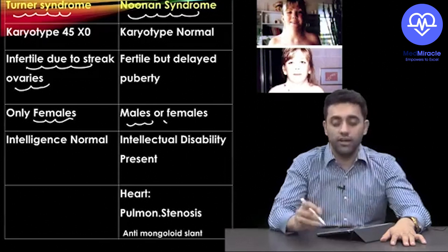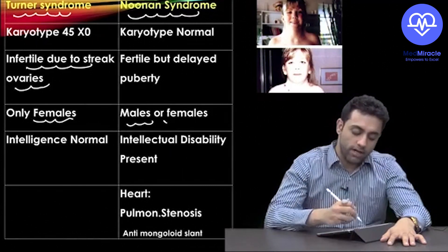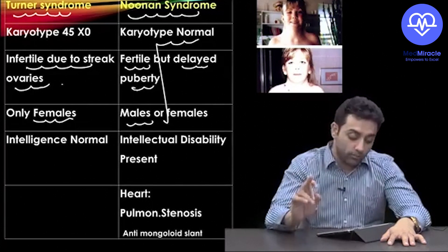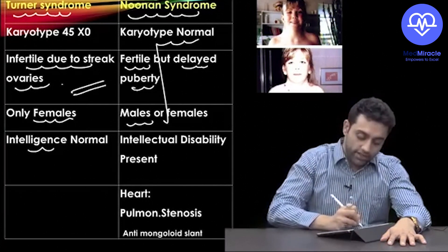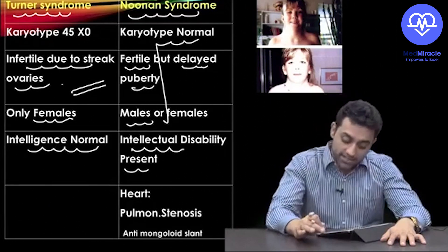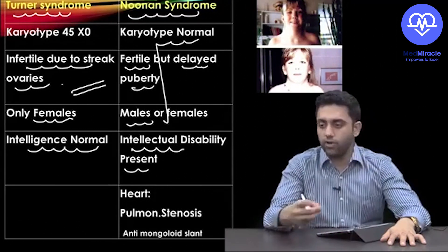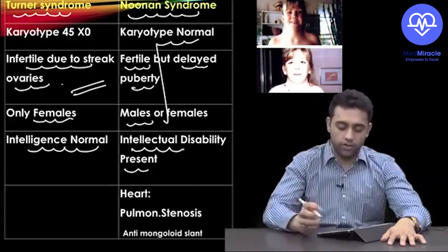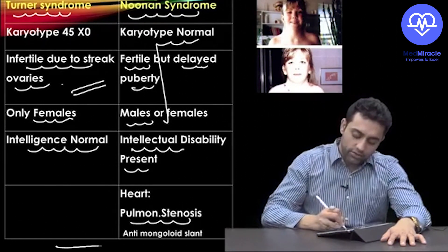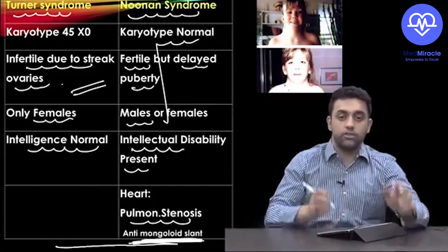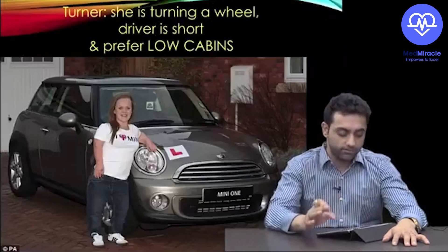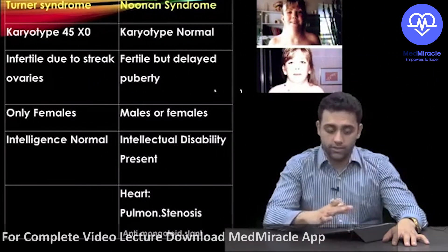Karyotype differences: Turner Syndrome is 45 XO, whereas Noonan Syndrome has a normal karyotype. Turner Syndrome has normal intelligence; Noonan Syndrome has intellectual disability. The most common congenital heart defect in Noonan Syndrome is pulmonary stenosis. Both Noonan Syndrome and Treacher Collins Syndrome show an anti-mongoloid slant.